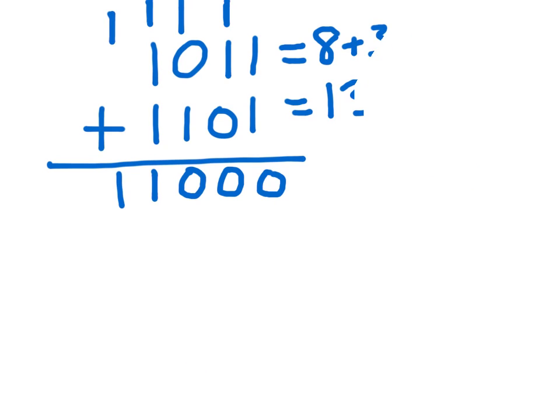So let me recap the rules. All you have to remember is that if a column has all 0s, you drop down a 0. If a column has a 1 and a 0, you drop down a 1. If a column has two 1s, you carry a 1 and then you drop down a 0. And if a column has three 1s, you carry the 1 and you drop down a 1.